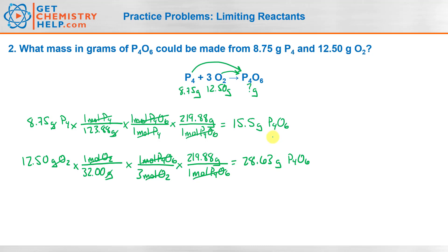So again, how many grams of P₄O₆ could we make? We always pick the smallest one — so in our case it's 15.5. Now, if the question asked to identify the limiting reactant — which of these reactants limited us to only making 15.5 grams — it would be the P₄. So phosphorus is the limiting reactant, which means oxygen must be the excess reactant.